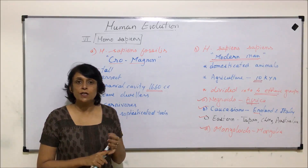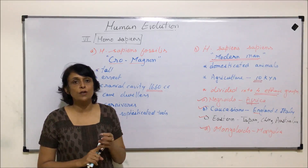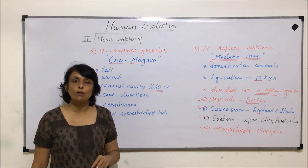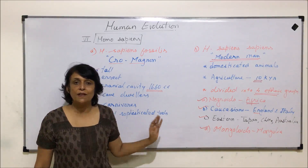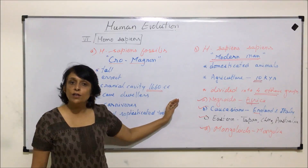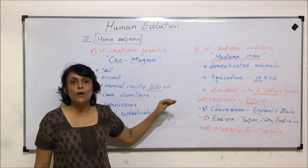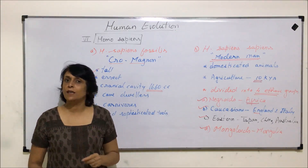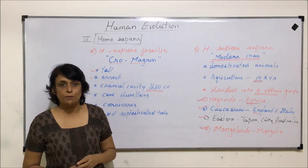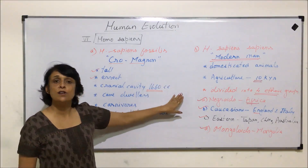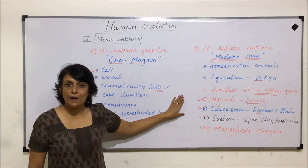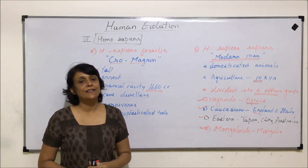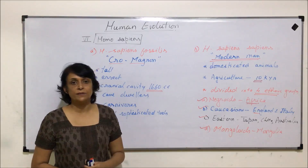The entire unit of genetics and evolution covered three chapters: genetics, which included Mendel's laws and principles; molecular basis of inheritance, covering DNA as genetic material and related experiments; and human evolution, which was this final part. From the next video, we will start with the next chapter.